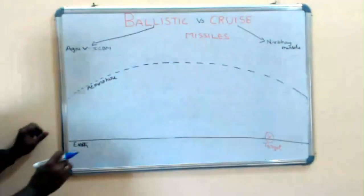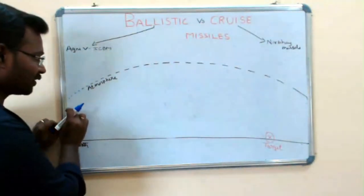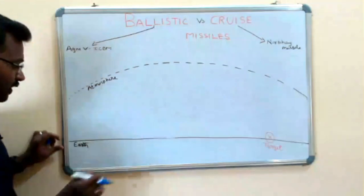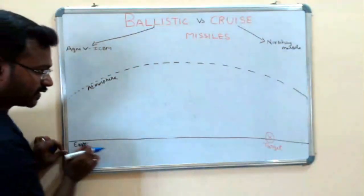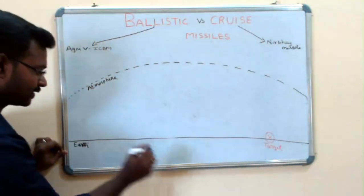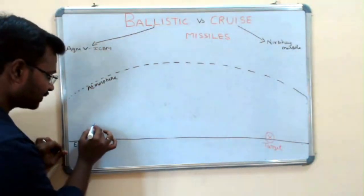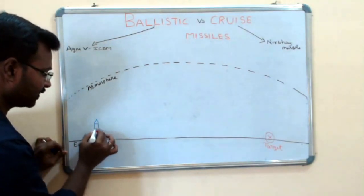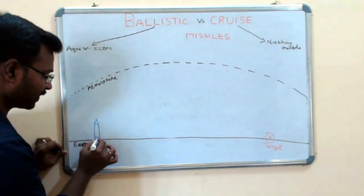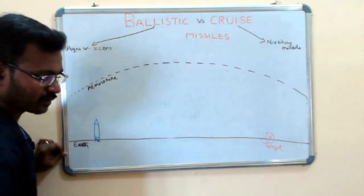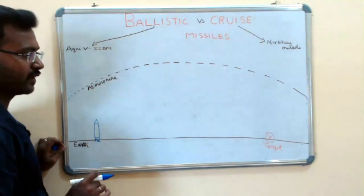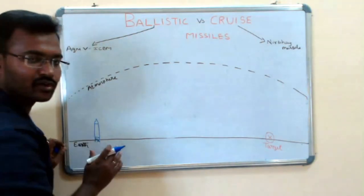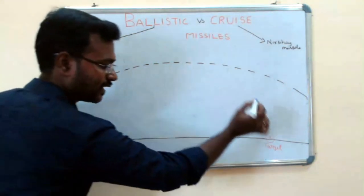So basically, we will talk about this atmosphere and this is our earth. We are making a missile to stand — one missile which we will shoot out. So this is our shootout.